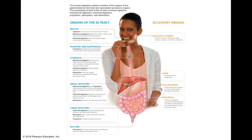Bicarbonate ions help buffer the environment to bring us back to a normal pH level. Remember, the stomach has a very low pH, while the intestines have a normal pH of about 7. The pancreas secretes bicarbonate ions that help bring the pH in the intestines back up to allow digestion to occur there.